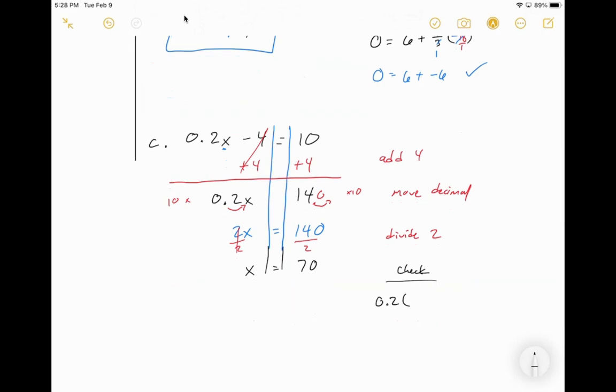0.2 times 70 minus 4 should equal 10. So, 2 times 70 is 140, but 0.2, so that's actually going to be 14, minus 4 is equal to 10. That looks good to me.